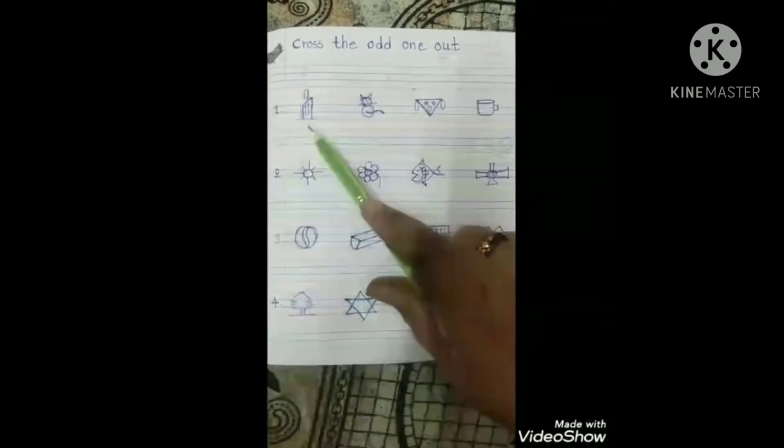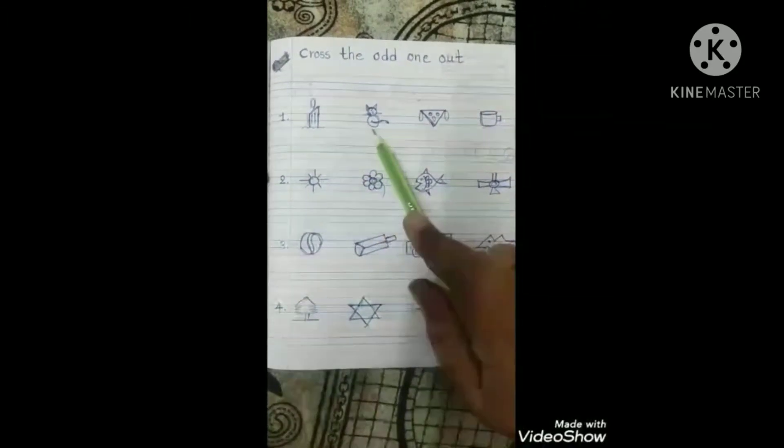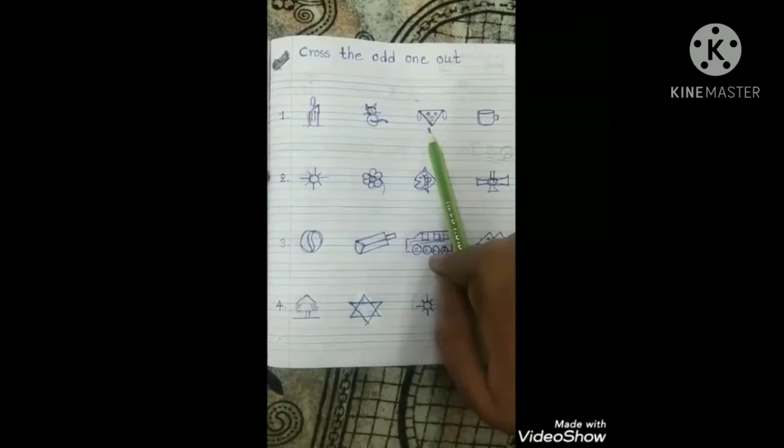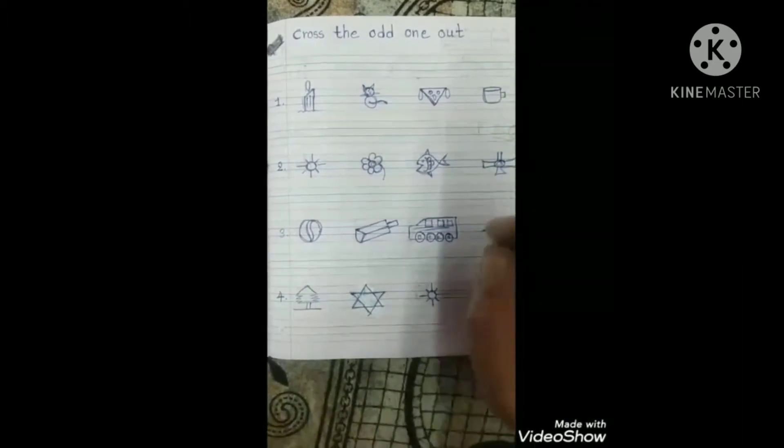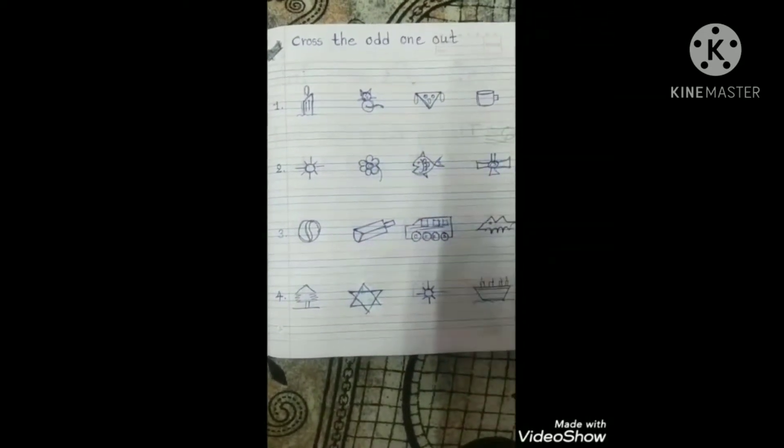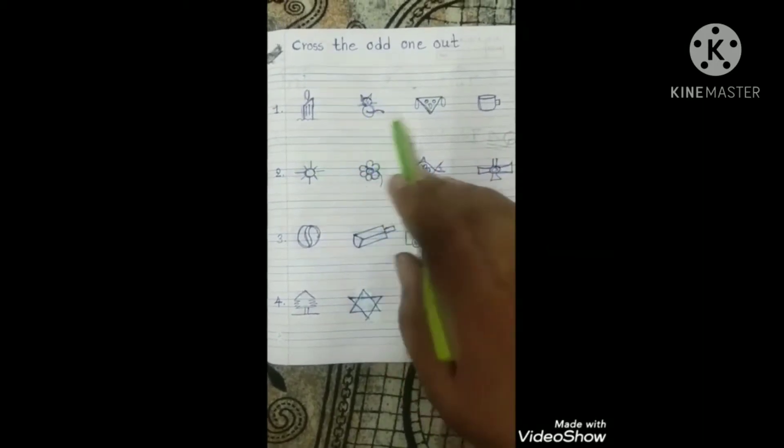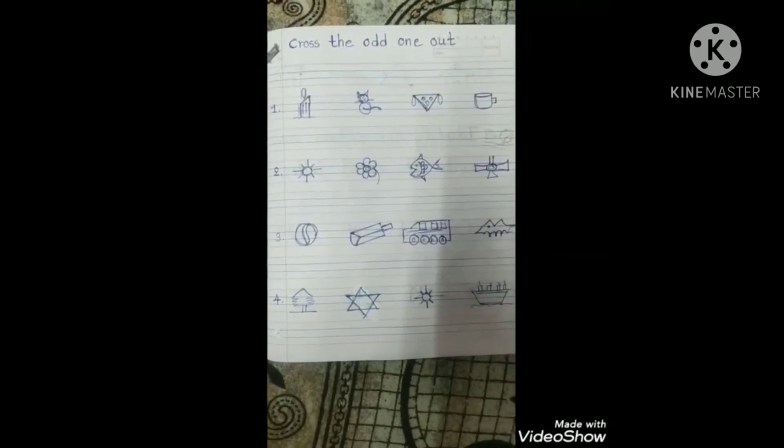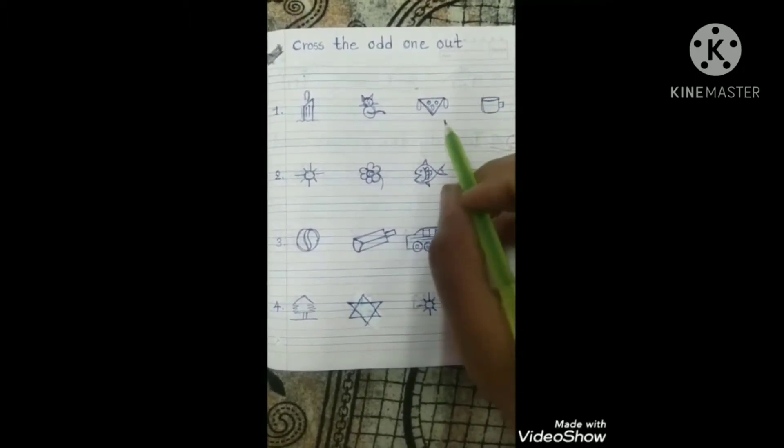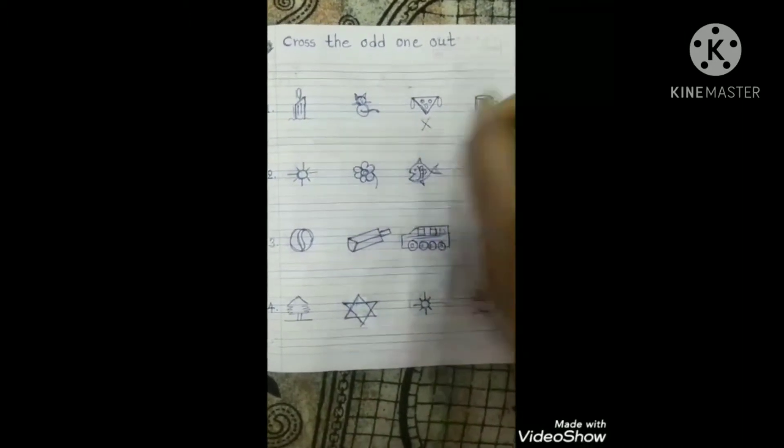Now start from here. C for candle, which picture is this? C for candle, C for cat, D for dog, and C for cup. Right kids? So these three, candle, cat, and cup, start from C. And D for dog is odd. These three start from C, beginning letter is C. Right? So kids, dog is odd because D for dog. So you have to cross out D for dog.